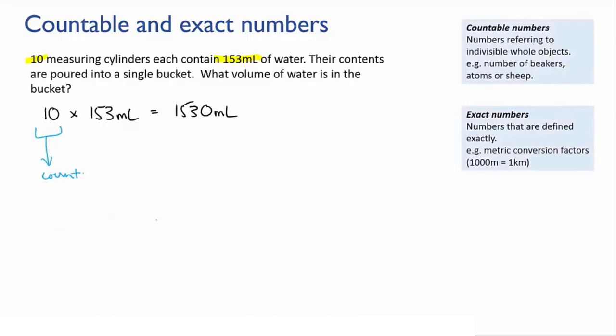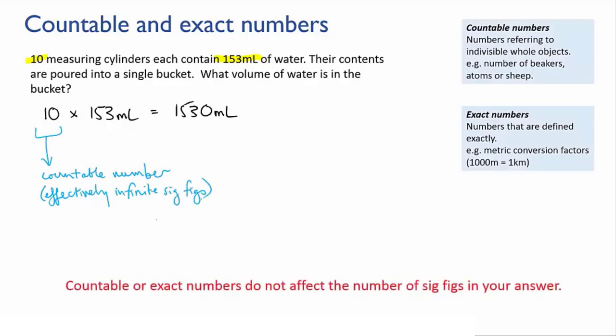It in effect has infinite significant figures. It is known exactly and as a consequence it does not affect the number of sig figs in your calculation. So here we use the sig figs in the volume measurement to determine our answer and since there are three, that means that the original answer that the calculator gave, 1530 mils, is actually correct.